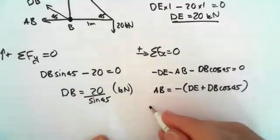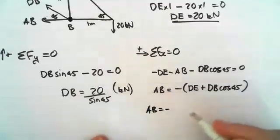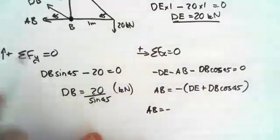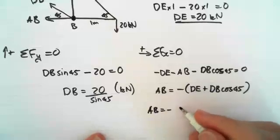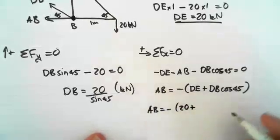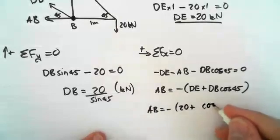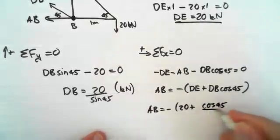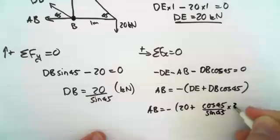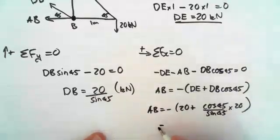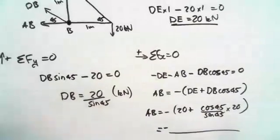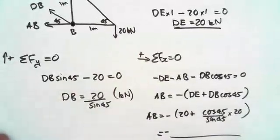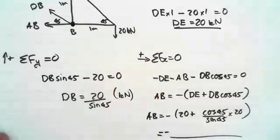So therefore AB equals negative. So the negative will indicate that it's acting in the opposite direction as we've got written here. So DE, so that's 20 plus cos 45 on sin 45 times 20 equals some number. And that's literally it. That's how we do the method of sections to find the forces in each member.